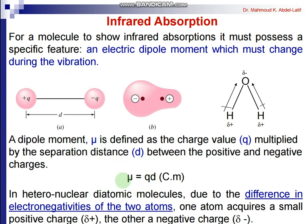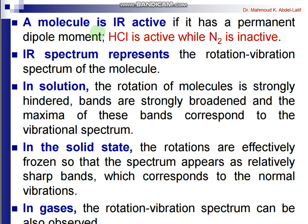The dipole moment μ is defined by the relation μ = q × d, where q is the charge and d is the distance, with units of coulomb·metre. In heteronuclear diatomic molecules such as HCl, due to the difference in electronegativities of the atoms, there is a permanent dipole moment. This is the reason for the interaction of light with matter giving rise to spectra. A molecule is IR active if it has a permanent dipole moment, like HCl, while homonuclear diatomic molecules are IR inactive because there is no permanent dipole moment.